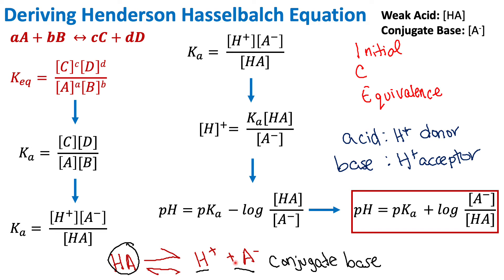Now that we know our reactants and products, we can write the KA expression specifically for acids. Products go on top and reactants on the bottom, so we have the concentration of H+ times the concentration of A-, divided by the concentration of our weak acid HA. To isolate H+, we rearrange: we bring HA over to multiply with KA, and we bring A- to the other side dividing, giving us H+ equals KA times [HA] divided by [A-].